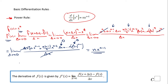So this is the derivative of x to the n. For instance, if I have f(x) = x to the 8th power, the derivative will be: move the 8 up front, keep the base x, and drop one degree from the power, giving 8x to the 7th.